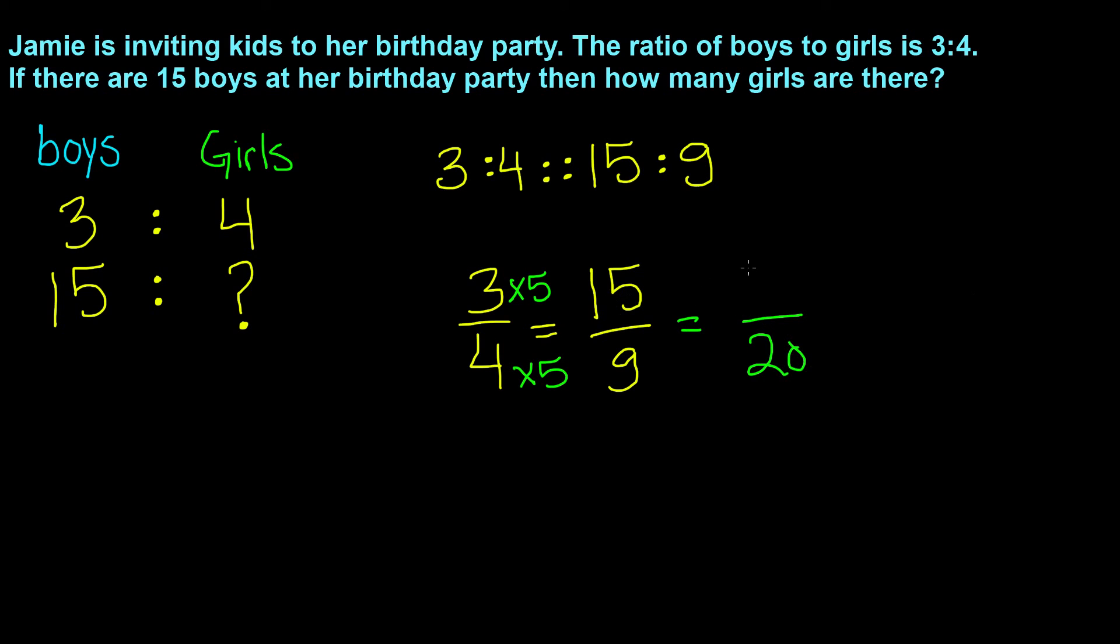And our numerator remains 15. So, 15 over 20 is 15 to 20, which is our ratio. So, now we know that 20 girls attended Jamie's birthday party.